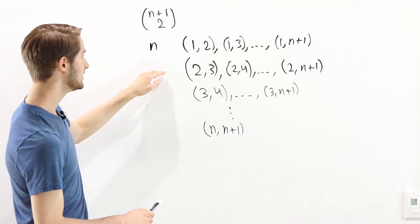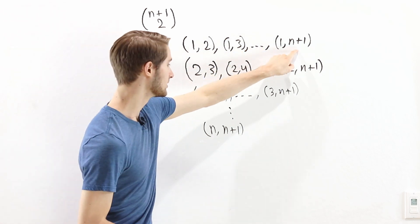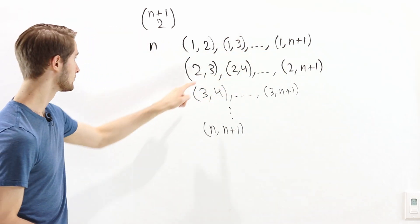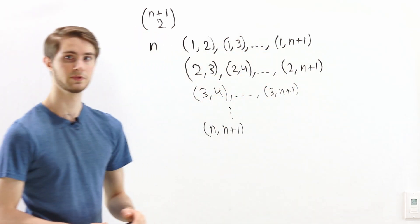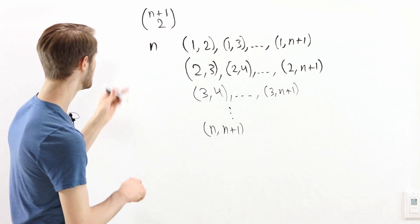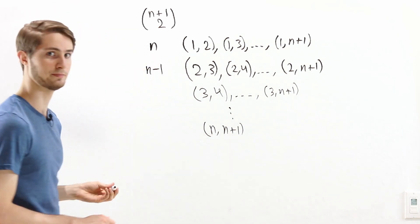In the second row, instead of all the integers from 2 to n plus 1, we have all the integers from 3 to n plus 1. That's going to be 1 less. So in the second row, there are n minus 1 pairs.